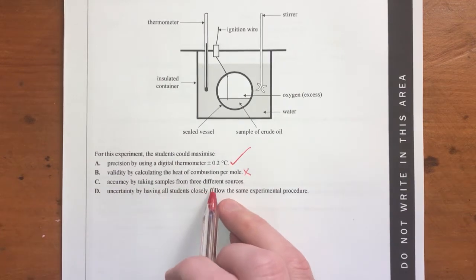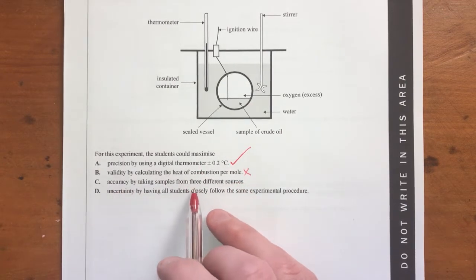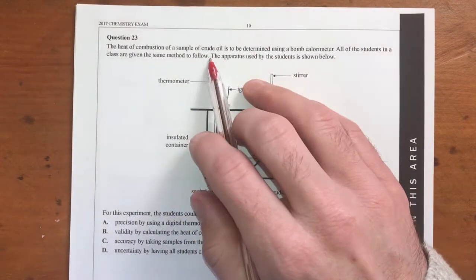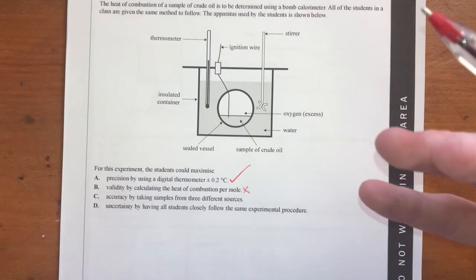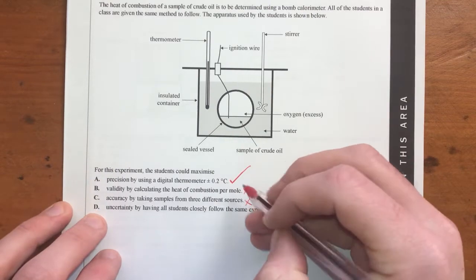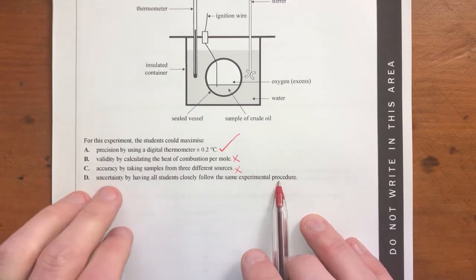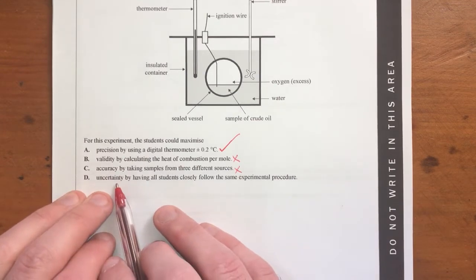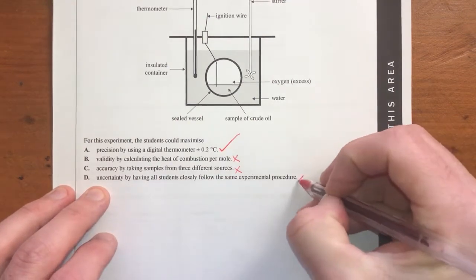Accuracy. By taking samples from three different sources. Accuracy is how close to the actual value you're going to get. I think having three different sources, being crude oil, it's not a homogeneous mixture. So it's just going to, I think that actually is going to broaden your range of values. So you're not going to get a really accurate, clear value for that one. So I still think precision is better off here. Uncertainty, by all students following the same experimental procedure. Uncertainty, your experimental comes from your experimental procedure actually. So depending on what you do is how uncertain you're going to be. So you're not going to improve your uncertainty by following the same procedure. So I don't think that's going to be right as well either. So we'll go with A.